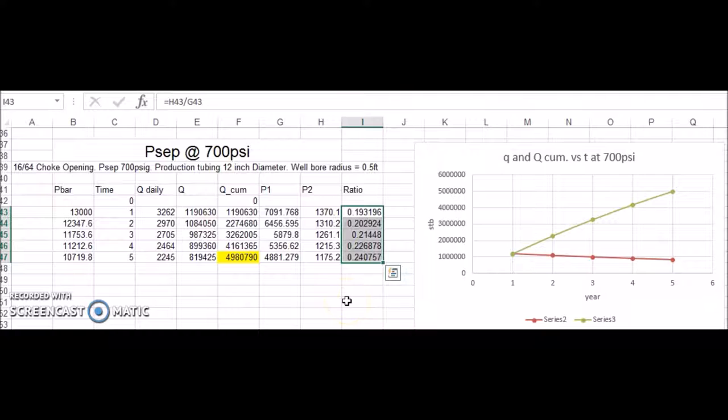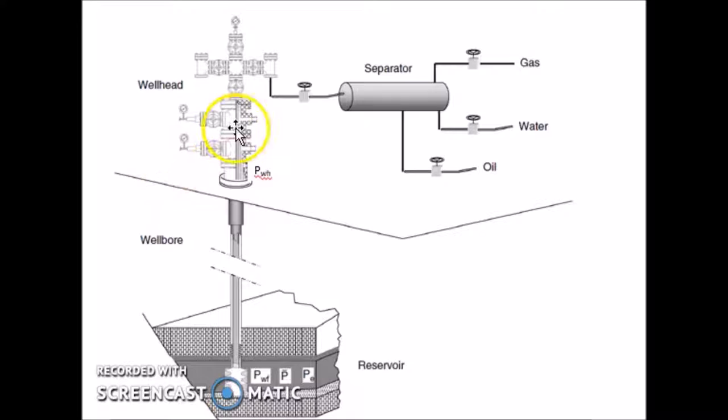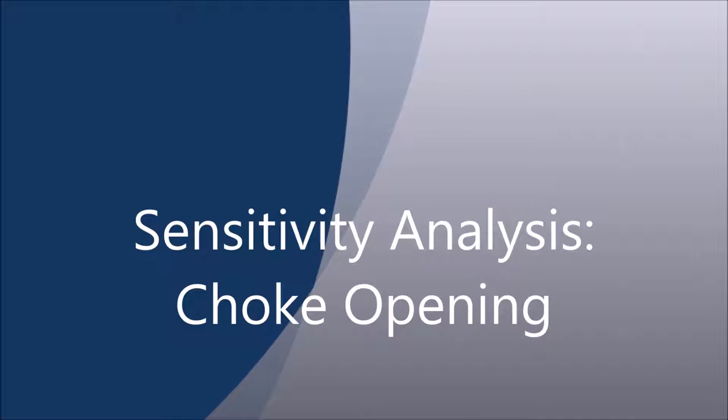So as you can see here, we are in critical flow for all 5 years. And when we are in critical flow, that means the changes that we make beyond the choke, such as changing the separator pressure, will not significantly affect what happens downhole from in the reservoir. So that means that when we change the separator pressure, raise it and lower it, it did not significantly affect our production from the reservoir.